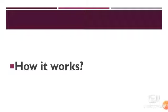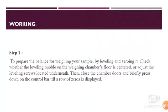Now, how does an analytical balance work? Step number one: prepare the balance for weighing your sample by levelling and zeroing it. Check whether the levelling bubble on the weighing chamber floor is centered, or adjust the levelling screw located underneath. Then close the chamber doors and briefly press down on the control bar until a row of zeros is displayed.